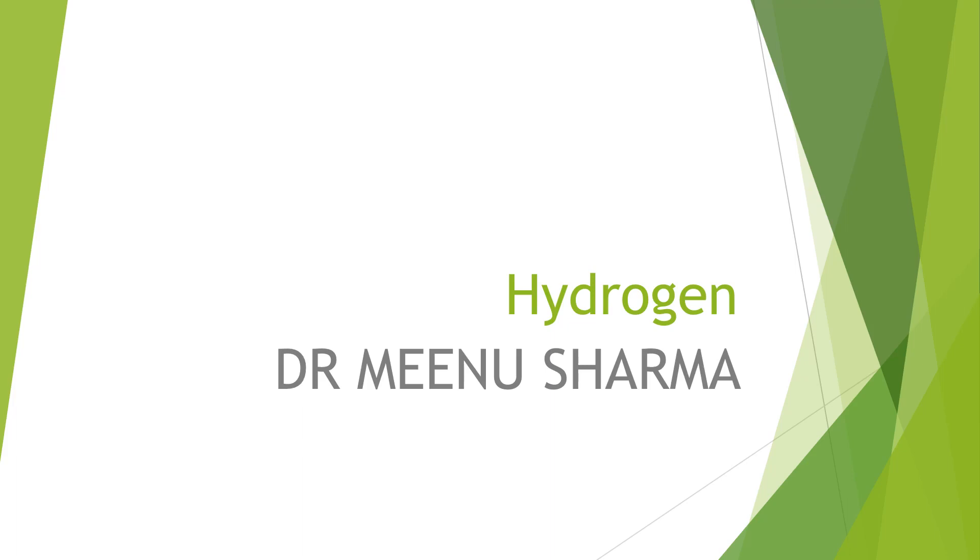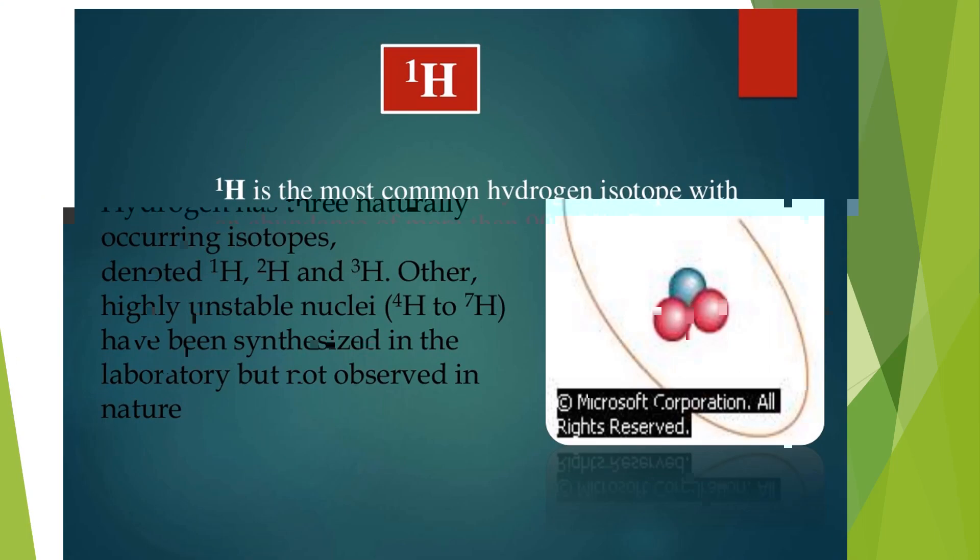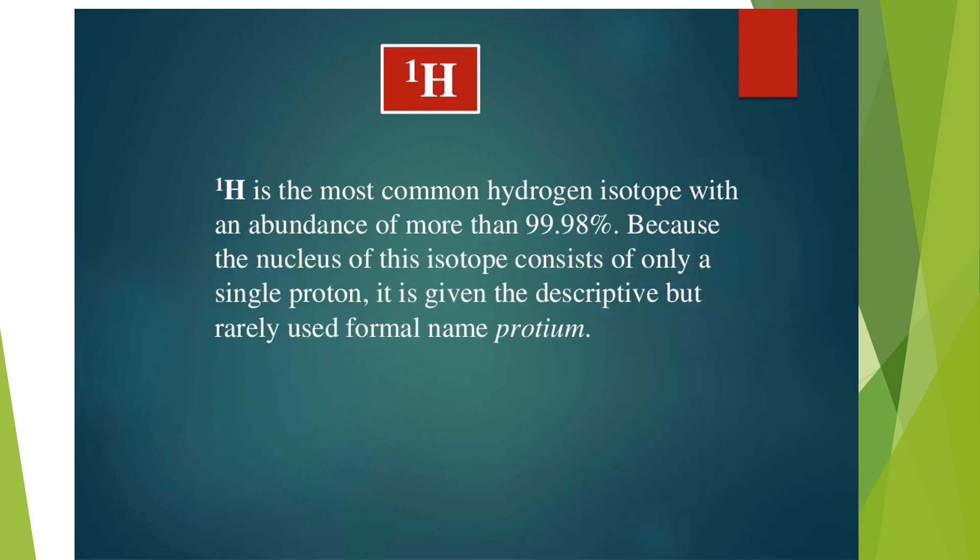Good morning, dear students. I am starting the topic hydrogen of class 11th chemistry. Hydrogen's most common isotope is protium, which accounts for more than 99.98%. The nucleus of this isotope consists of only a single proton, given the descriptive but rarely used formal name protium.